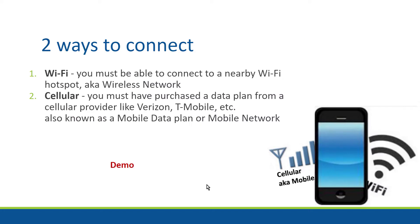So there are two ways to make this connection. One is using Wi-Fi. To use Wi-Fi, you must be able to connect to a nearby Wi-Fi hotspot, also known as a wireless network. Or you can use a cellular connection. To do that, you must have purchased a data plan from a cellular provider, like Verizon, T-Mobile, etc. This is also known as a mobile data plan or a mobile network.